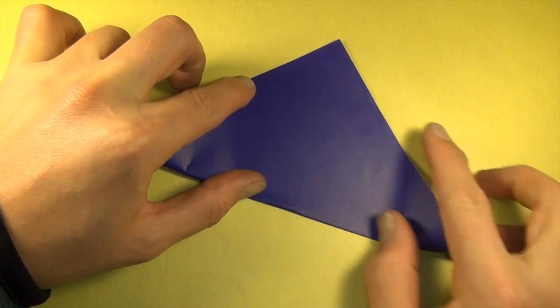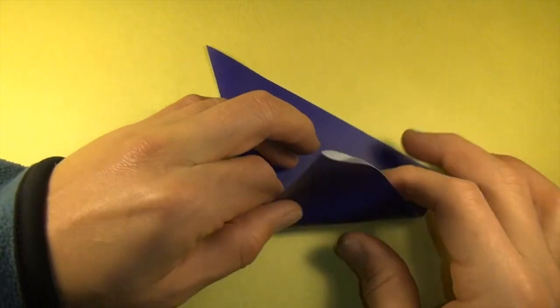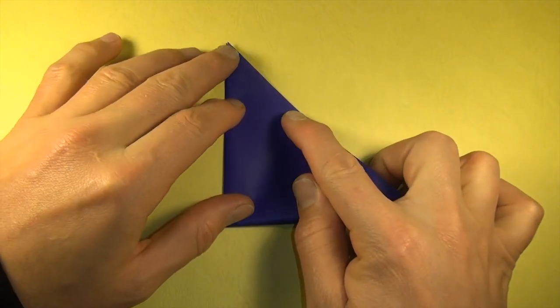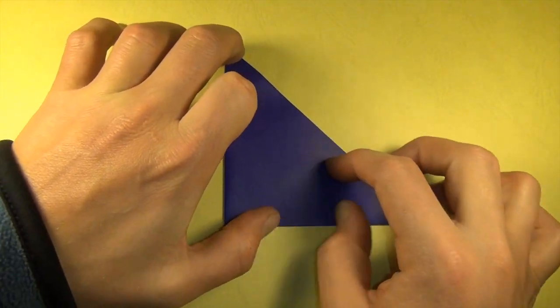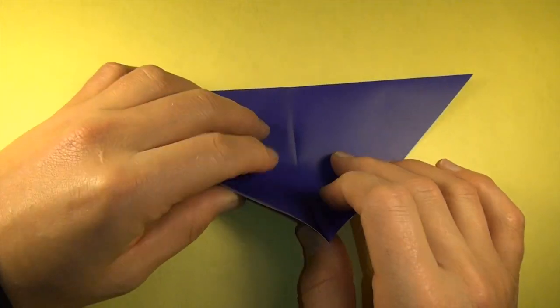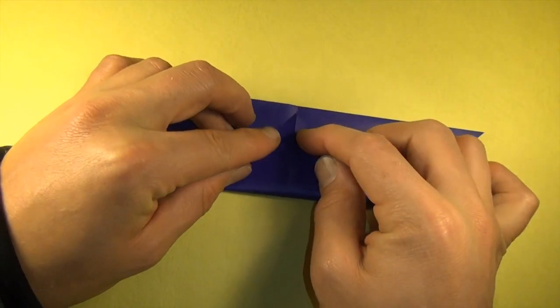So we're going to fold in half this way and this way. Fold both corners to the middle.